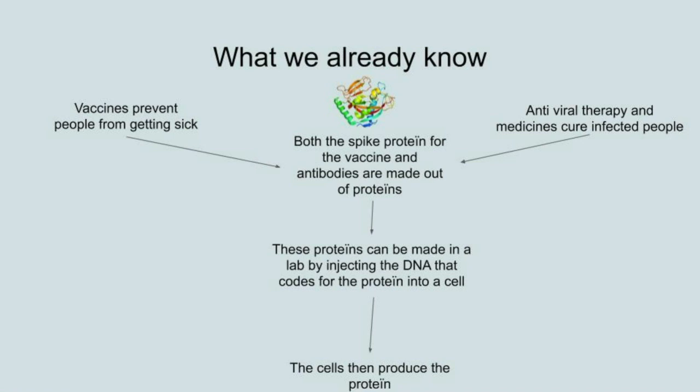Vaccines prevent people from getting sick. Antiviral therapy and medicines cure infected people. Both the spike protein for the vaccine and the antibodies are made out of proteins. These proteins can be made in a lab by injecting the DNA that codes for a protein into a mammal cell, a yeast cell or a bacterial cell. These cells will then produce proteins.